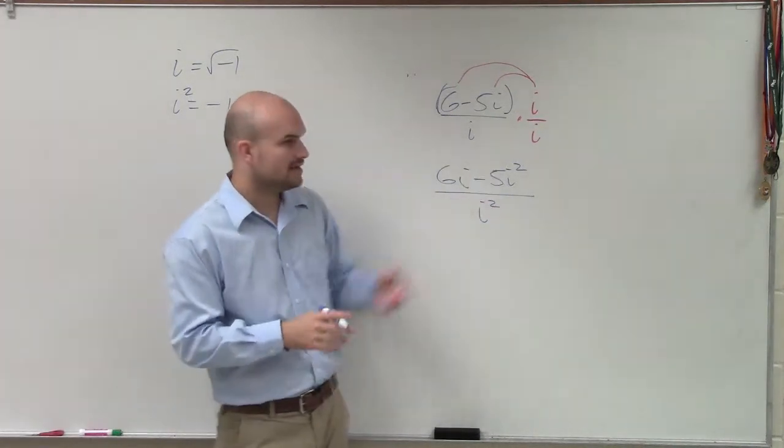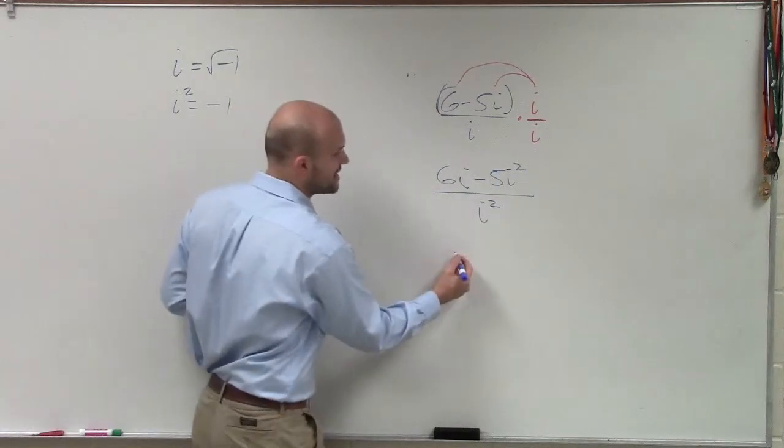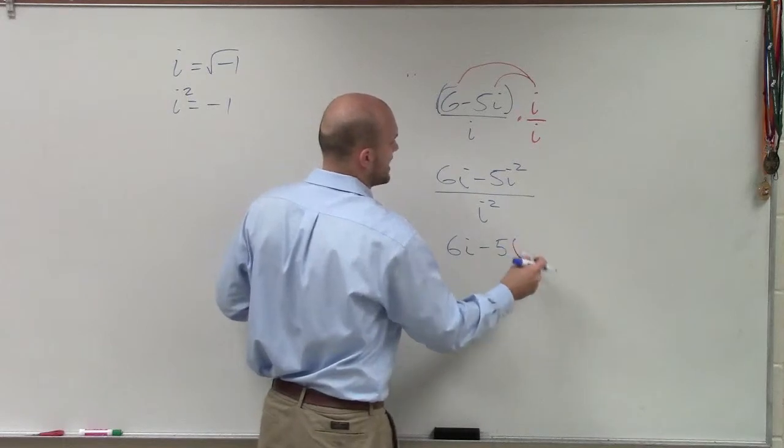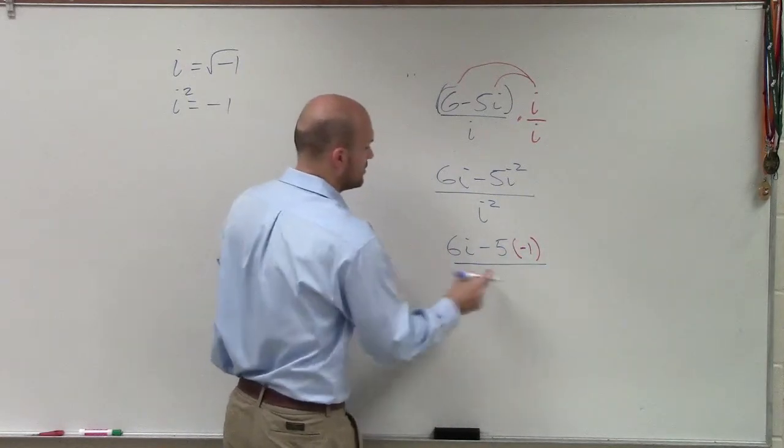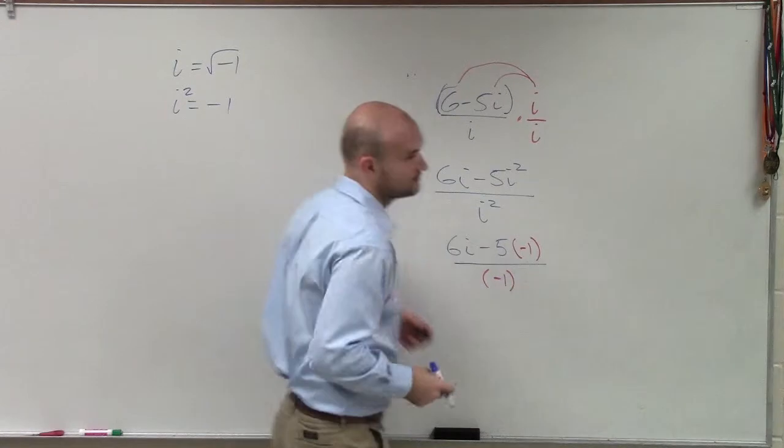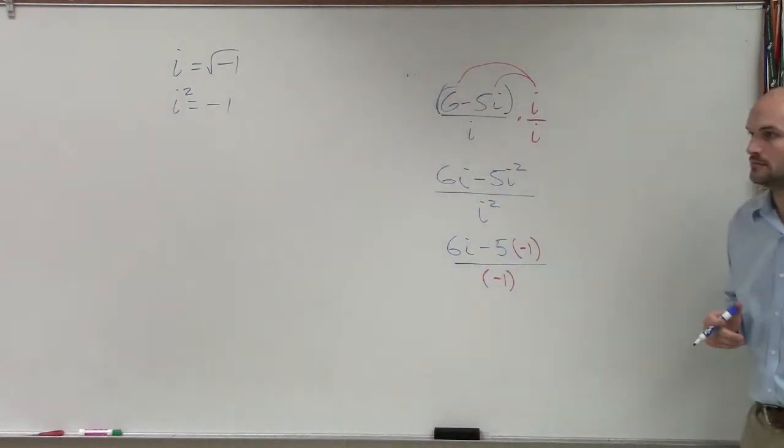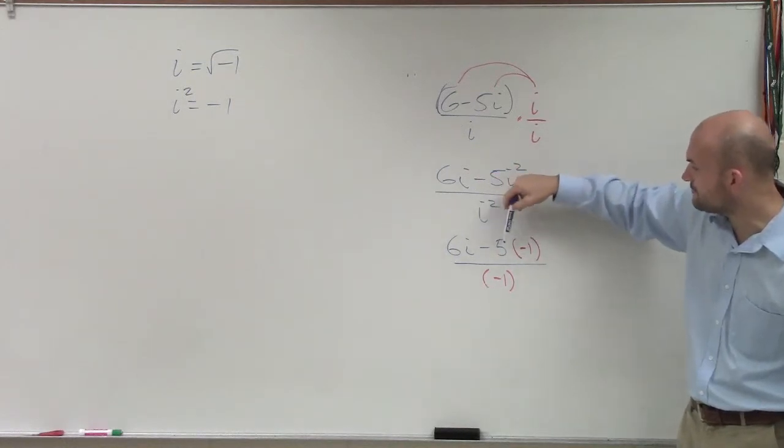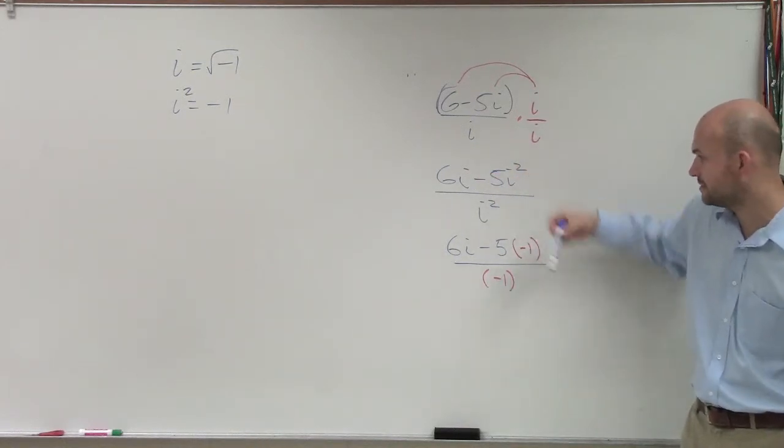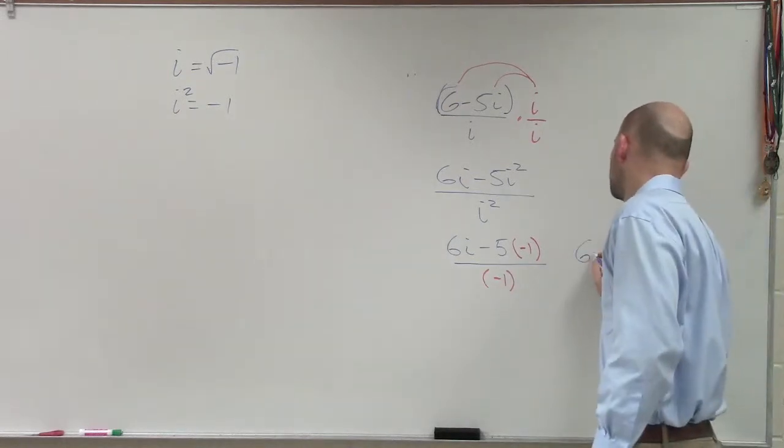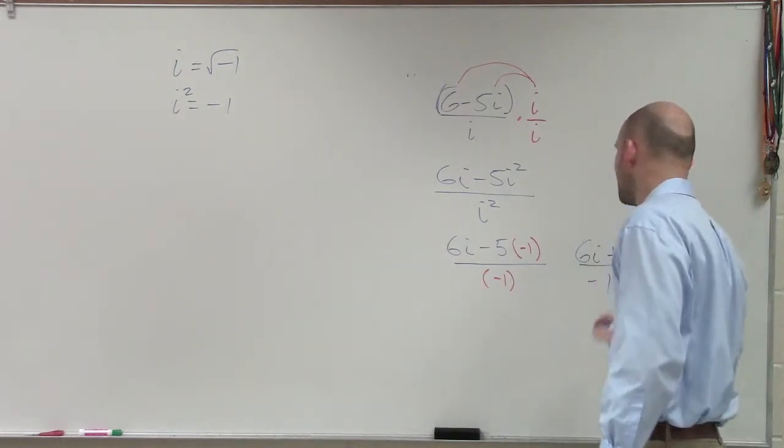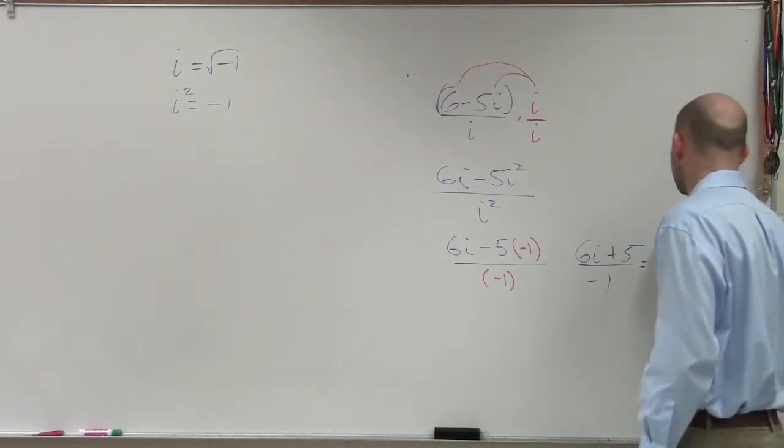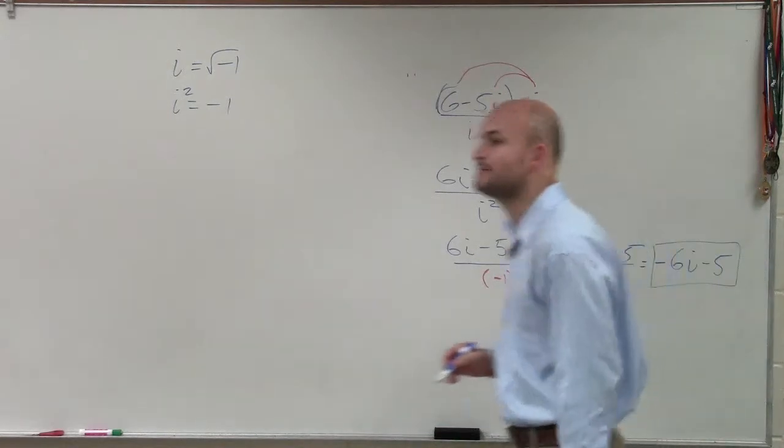Then we rewrite those, the i squareds, as negative 1, so we have 6i minus 5 times negative 1 over negative 1. Now, when you guys take a look at this, you have 5 times negative 1, so that becomes a positive. So I'd have 6i plus 5 divided by negative 1, therefore, I have negative 6i minus 5. That was the final solution for many, many students.